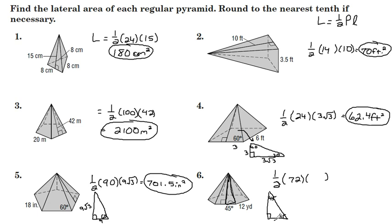Half of this is 6. Remember, 45, 45, 90 triangles. Both legs are the same. This is 6 as well, one half times 72 times 6, 216 square yards, and there we are.